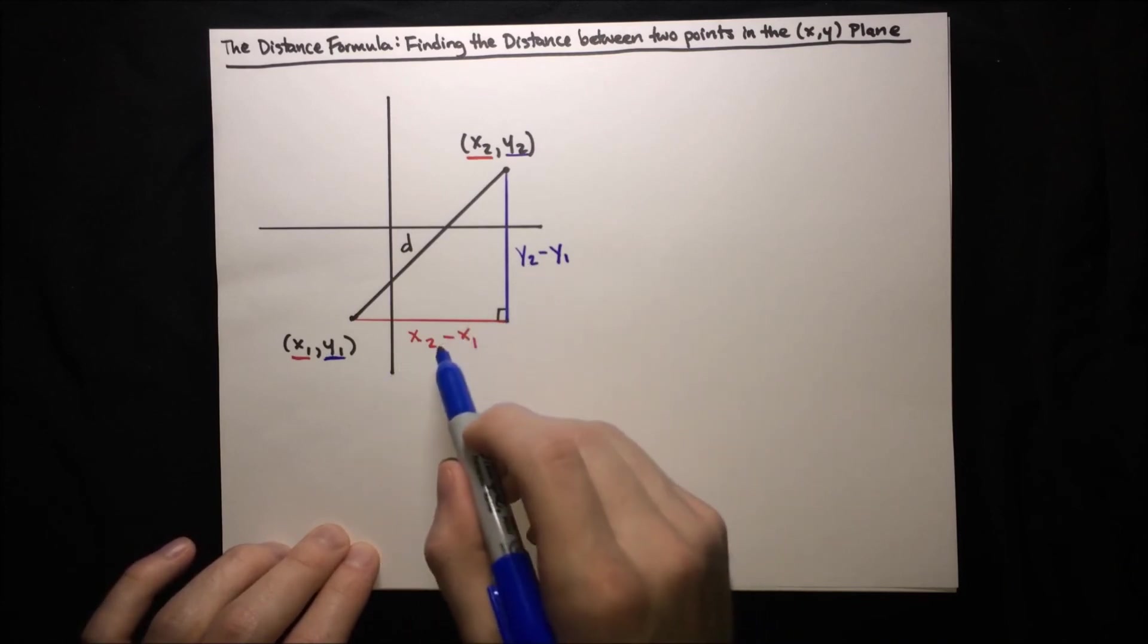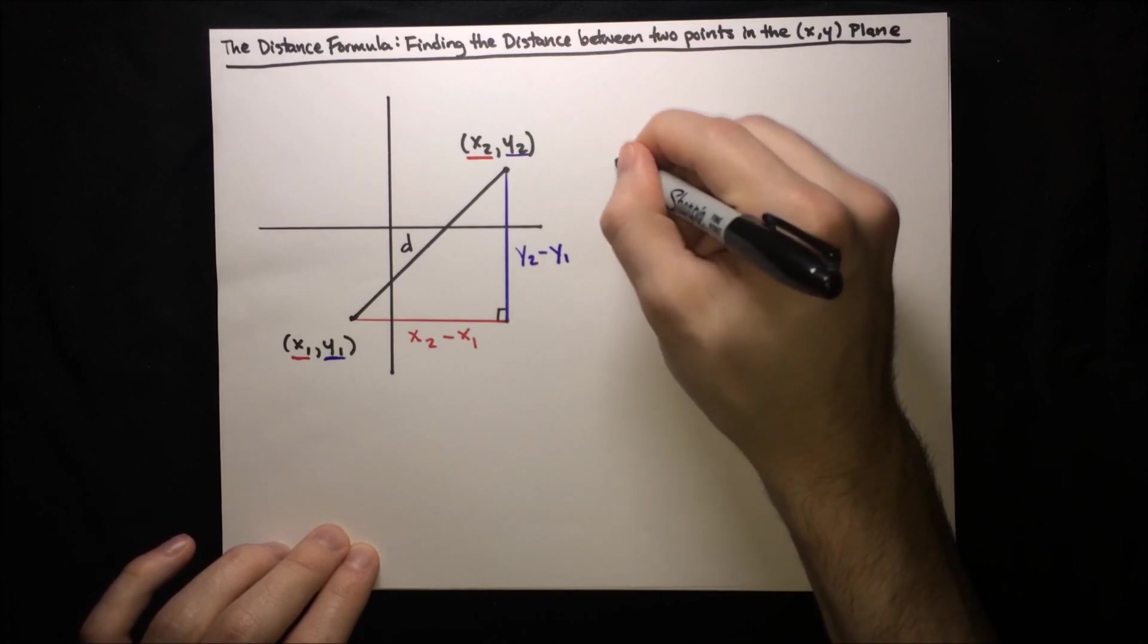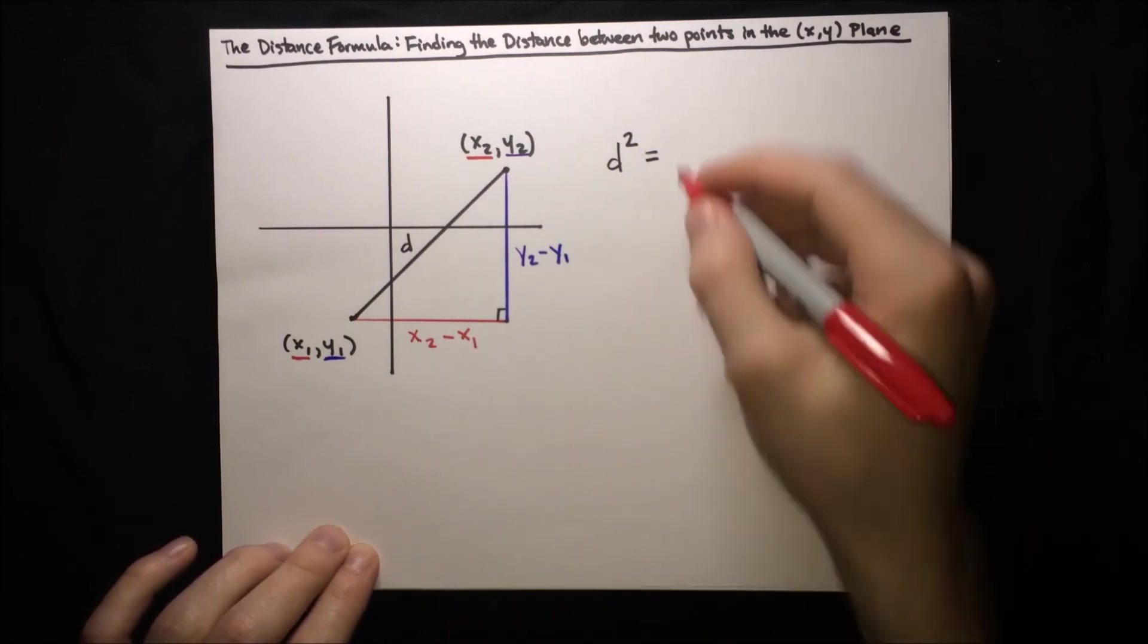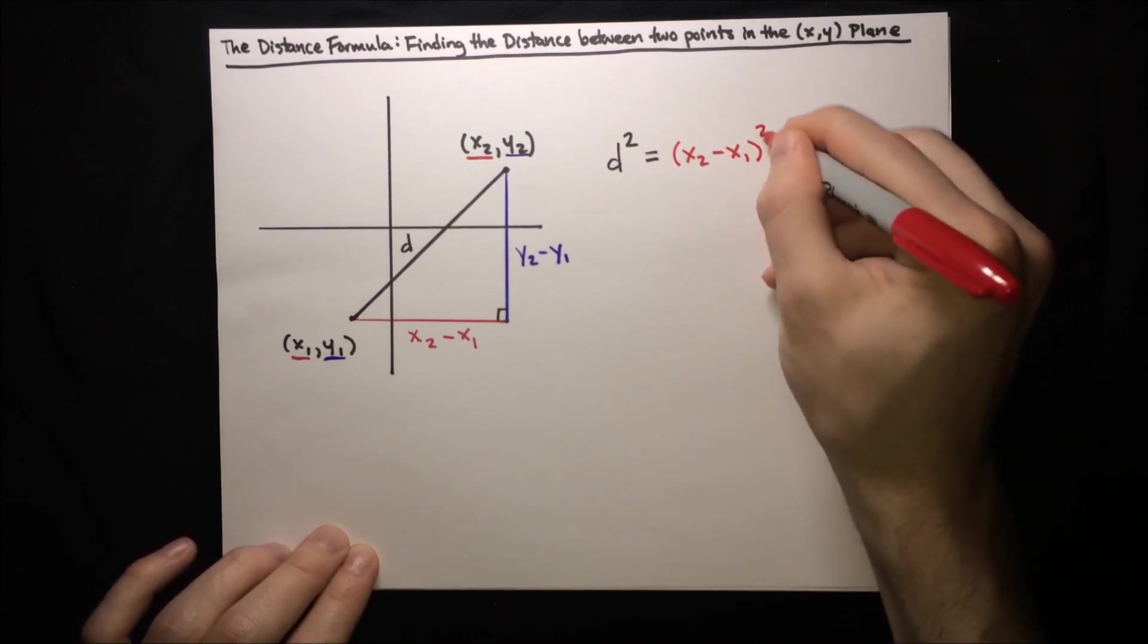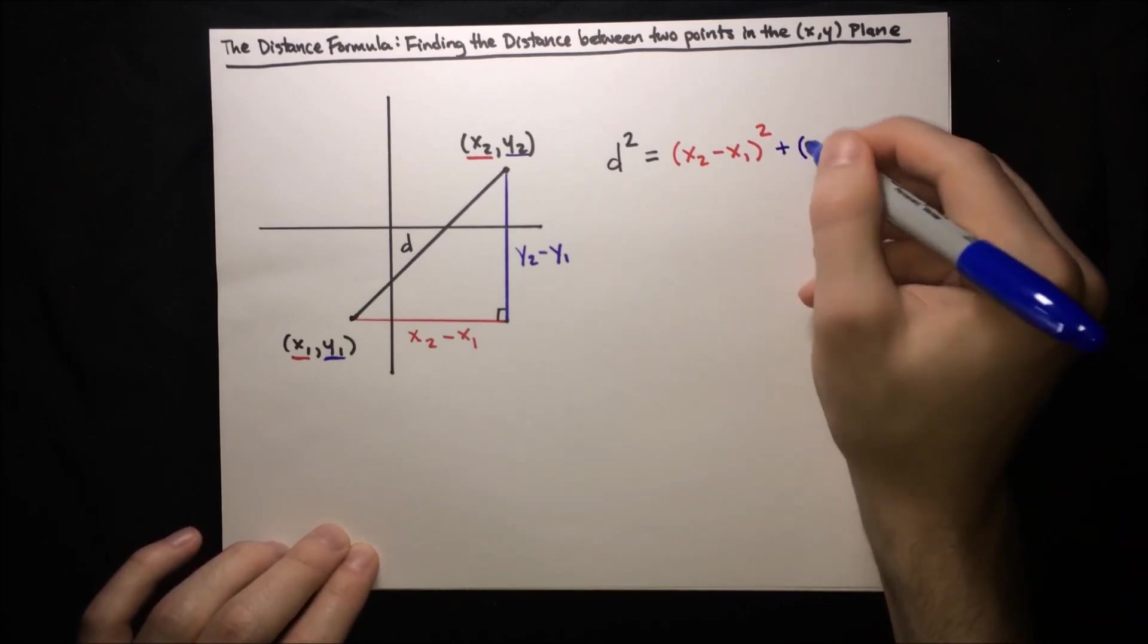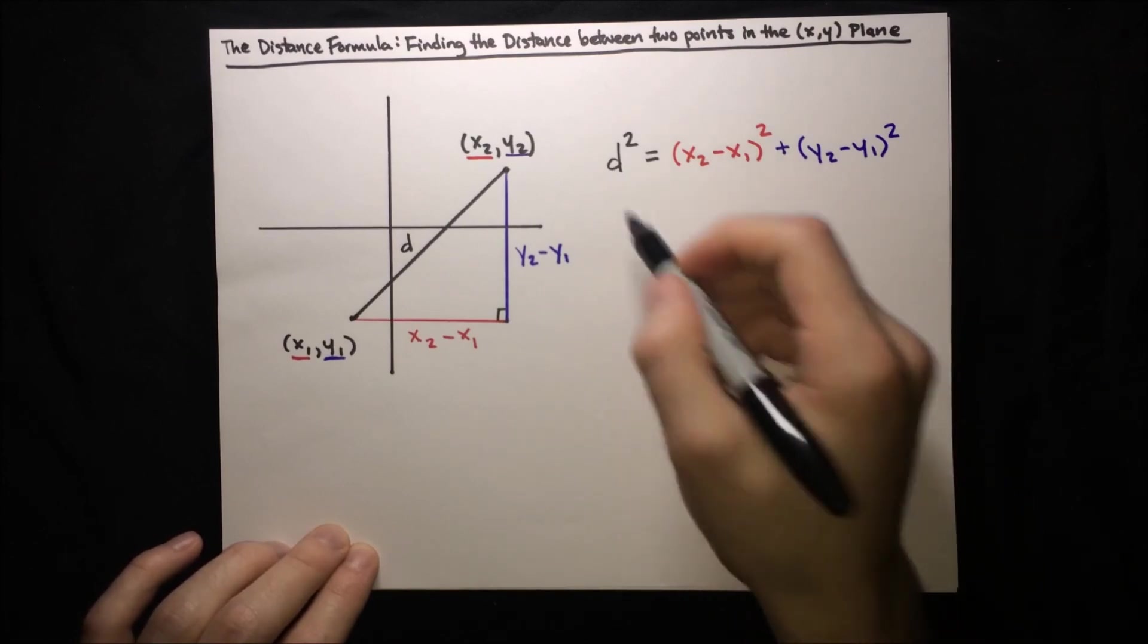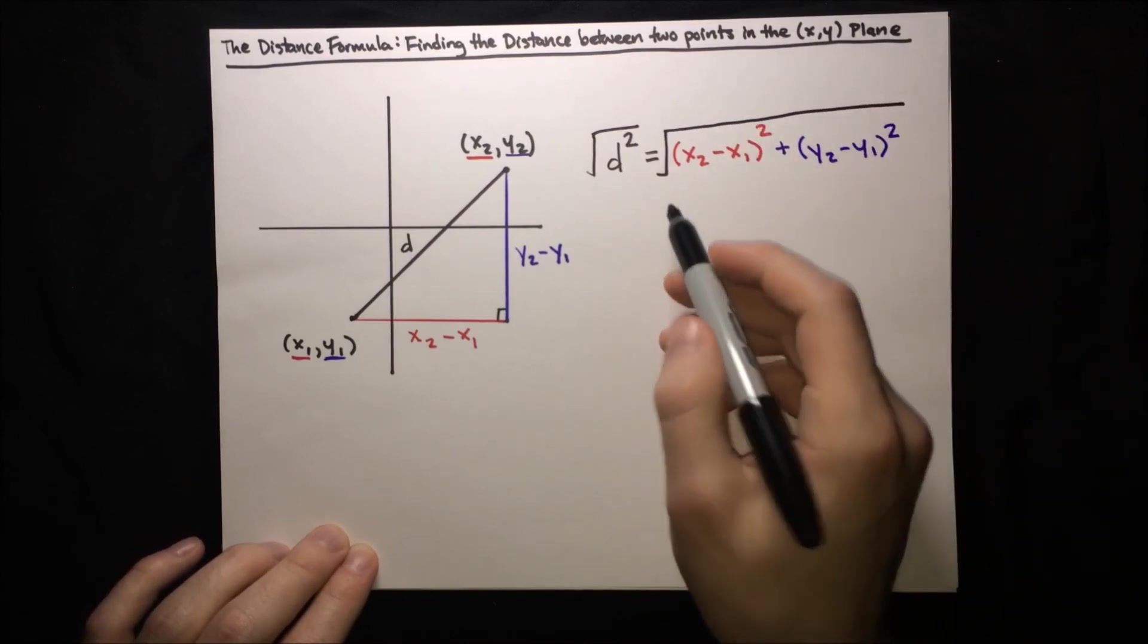Okay. Now that we've got our side lengths, we can go ahead and set up the Pythagorean theorem. So Pythagorean theorem just says that the distance squared, the hypotenuse squared, is equal to the first side length squared. The first side length is just x₂ minus x₁, and then we square it, then plus the second side length squared. So the second side length is y₂ minus y₁, and then we just have to square it. Alright, now to solve for the distance, we simply take the square root, and there we have it, the distance formula.